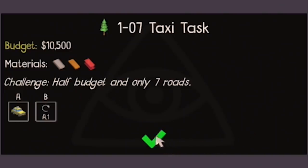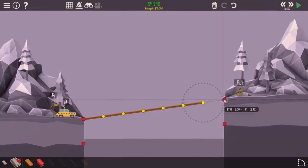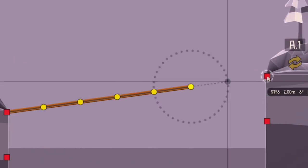Oh good. Half budget and only seven roads. So it has to go all the way up and all the way back. And I'm assuming there's only enough road to get it one way. It doesn't even give me enough road to go all the way across.